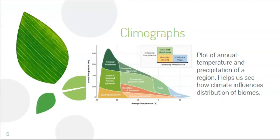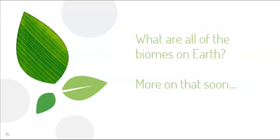One thing to know about terrestrial biomes is the climograph. If you have temperature and precipitation data for a region, you can figure out what biome it is. For example, an area with 25 degrees Celsius and 300 centimeters of rainfall would be a tropical rainforest. An area with negative 10 degrees and 10 centimeters of rainfall would be a tundra. You use the x and y axes to cross-reference temperature and rainfall to identify the biome — pretty cool.